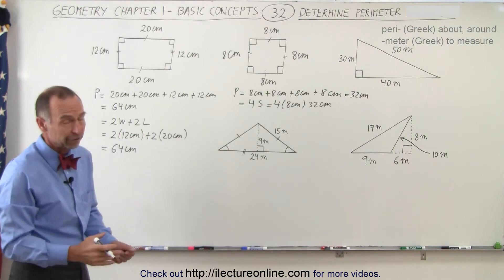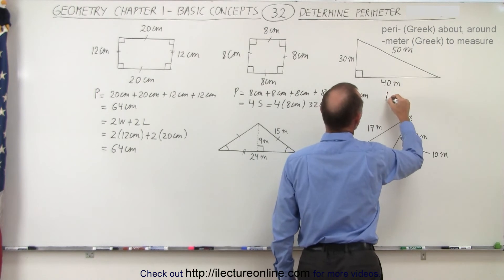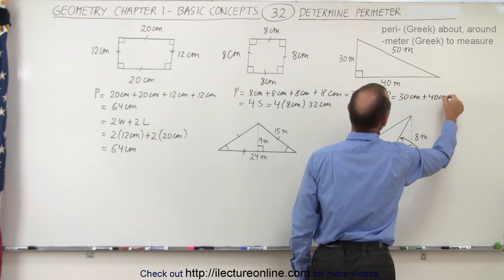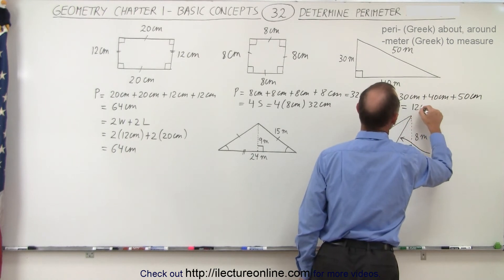A triangle, it's no different, although we only have three sides here. Since all three sides are different in length, we can say the perimeter is simply the sum of the three sides, which is 30 centimeters plus 40 centimeters plus 50 centimeters, that's 120 centimeters.